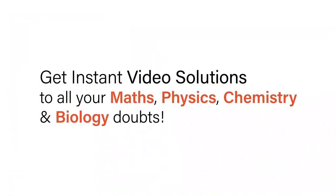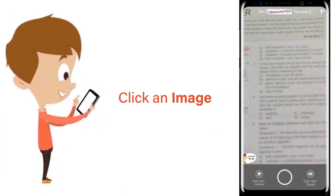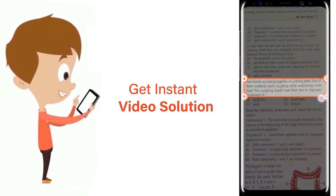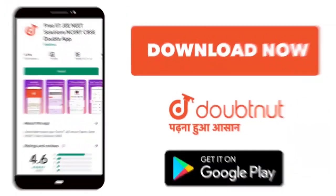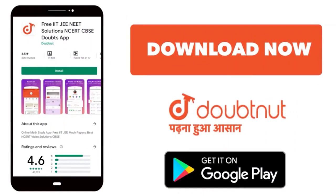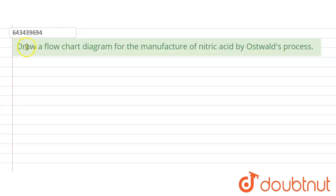Welcome to Doubtnut. In this question, we are asked about drawing a flow chart diagram for the manufacturing of nitric acid by the Ostwald process.